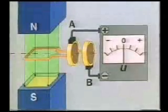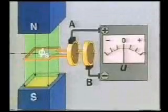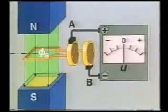This is the case when the conductor loop rotates. If the loop stops, the flux does not change and the voltage remains at zero.